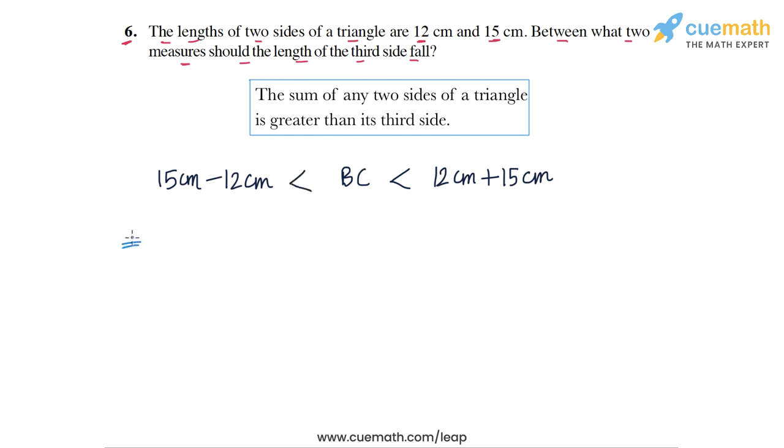This means that BC must be greater than 3 centimeters and BC must be less than 27 centimeters. So BC must lie between 3 centimeters and 27 centimeters. This is the answer for question number 6.